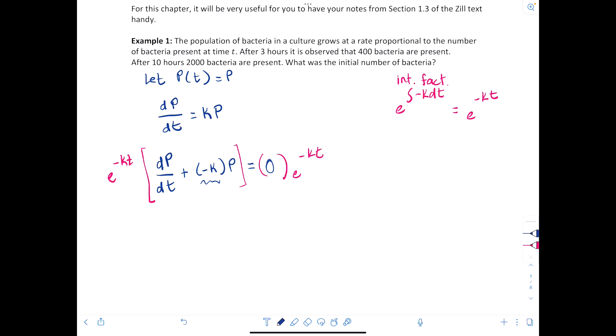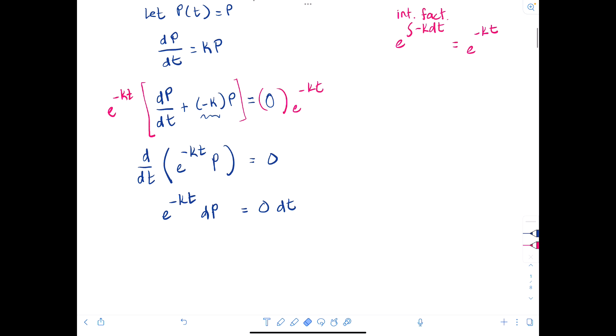Remember that trick where you write it as d/dt of this product. So you have e to the negative kt times P, where if you differentiate that product with respect to t, you'll get what's inside these brackets. On the other side, we're just going to get zero. So now rewriting, we'll have e to the negative kt dP equals zero dt. When we integrate both sides, on the left side we'll get e to the negative kt times P, and that's just going to equal to our constant of integration.